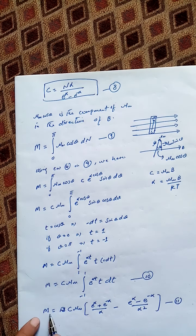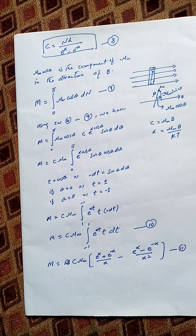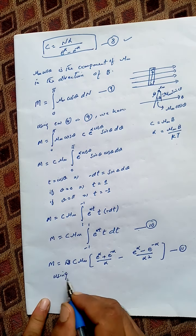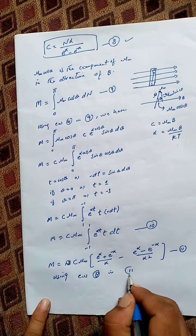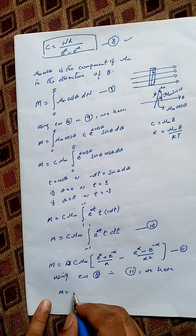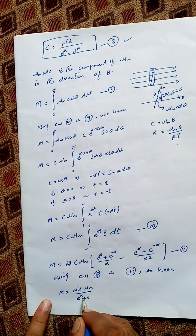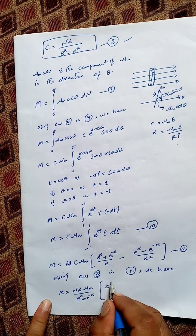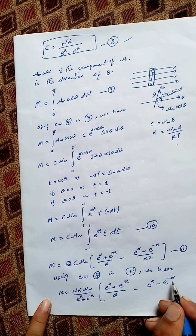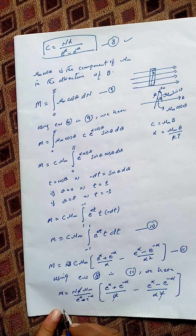Using equations 8 and 11, we replace C with N·α over (e^α − e^(−α)). Substituting into equation 11 and simplifying, the α terms cancel, giving the final expression M equals N times μM times the bracketed quantity.